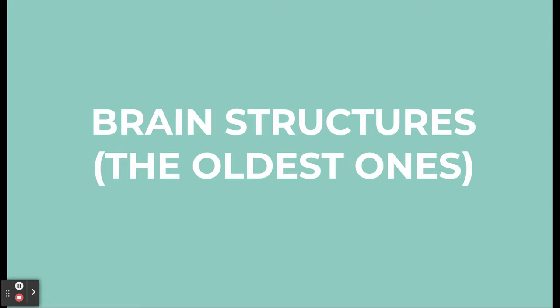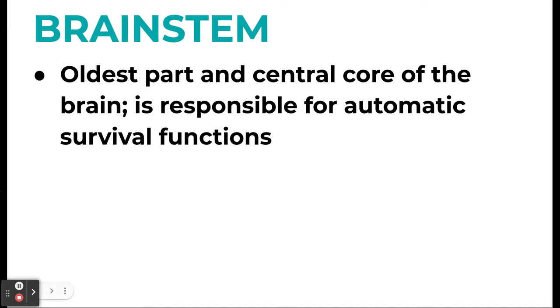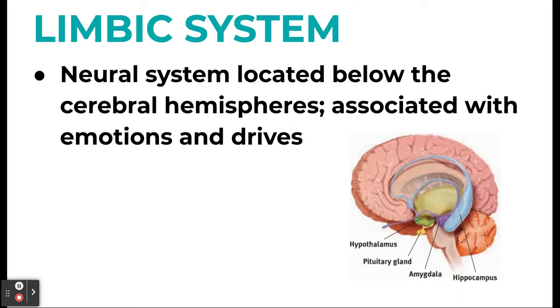Now getting into the brain itself: the brain developed from the bottom to the top. The oldest parts deal with automatic survival functions. The brain stem is the oldest part of the central core and is responsible for automatic survival functions like heartbeat and breathing. Above that is the limbic system, located below the cerebral hemispheres, which is associated with emotions and drives — these basic instincts. We'll look at the amygdala and hippocampus shortly.